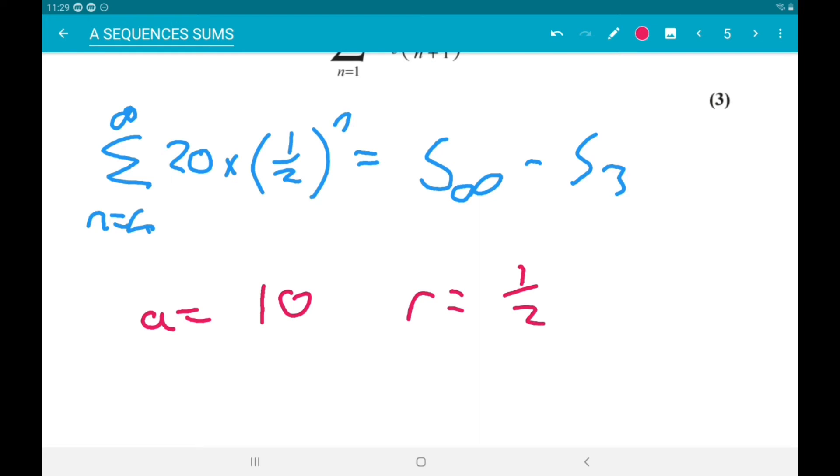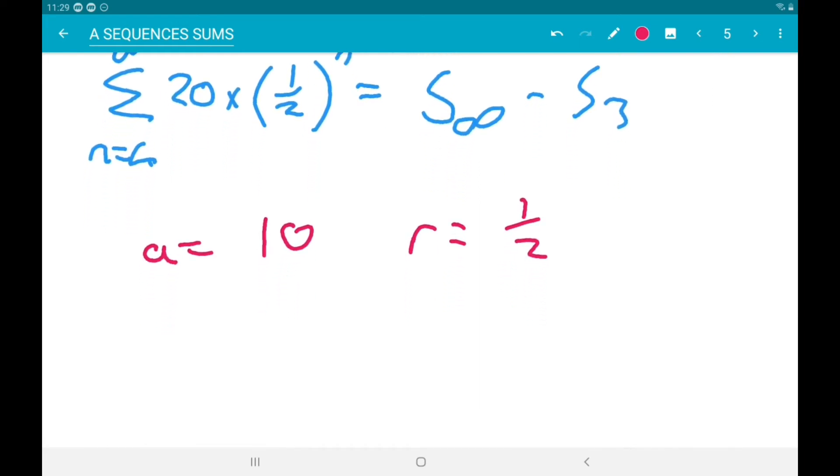So, the sum to infinity is 10 over 1 minus one half, and that gives us 20.